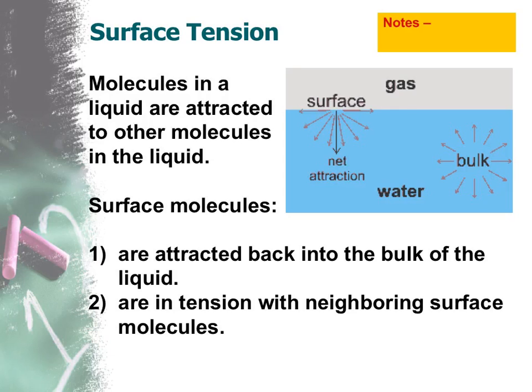The second and last topic I want to talk about today is surface tension. This is another property of liquids. Any liquid will have what's called surface tension, but some liquids have greater surface tension than others. It all depends on the molecular structure of that liquid. Water happens to be something that has a lot of surface tension. But what is surface tension? Let me get into that.